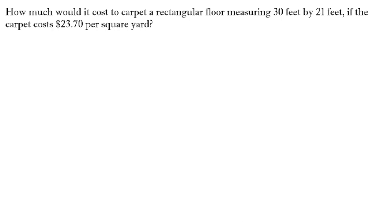How much would it cost to carpet a rectangular floor measuring 30 feet by 21 feet, if the carpet costs $23.70 per square yard? So here, because we have our units in terms of yards, but our floor was measured in feet, we have to get all of that into the same unit. Now, in order for us to do that, let's first start by finding what the area is in square feet. How do you find the area of a rectangular floor? It's going to be the length times the width. So the area equals 30 feet times 21 feet, which gives us 630 square feet.